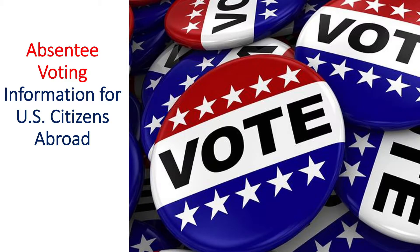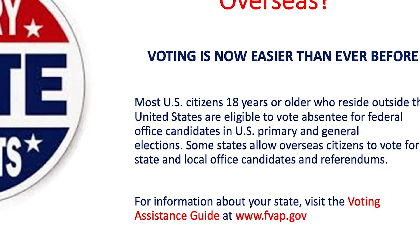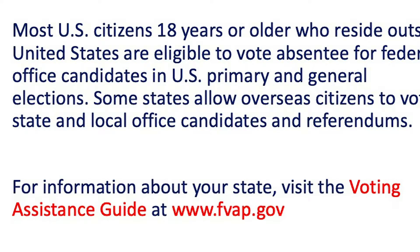Good morning. Today we're going to answer the question: how do I vote overseas? Most citizens 18 years and older who live outside the United States can vote absentee for federal office candidates. Some states even allow citizens to vote at the state and local level while living overseas. All this information can be found at fvap.gov.